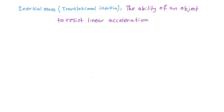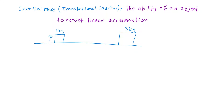For example, if you have two objects — one is a one-kilogram mass and the other is a five-kilogram mass — it will be much harder to accelerate the five-kilogram object. Therefore, that five-kilogram mass has a higher inertial mass.